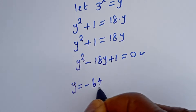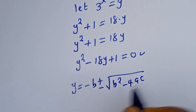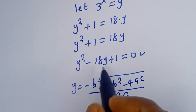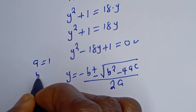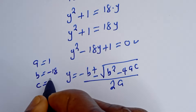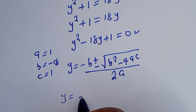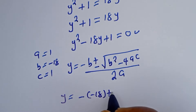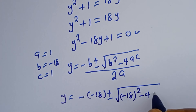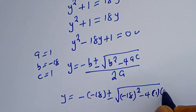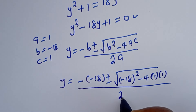Therefore, y is equal to minus b plus or minus square root of b squared minus 4ac, all over 2a. From this equation, a is equal to 1, b is equal to minus 18, and c is equal to 1. Substituting: y is equal to 18 plus or minus square root of minus 18 squared minus 4 times 1 times 1, all over 2 times 1.